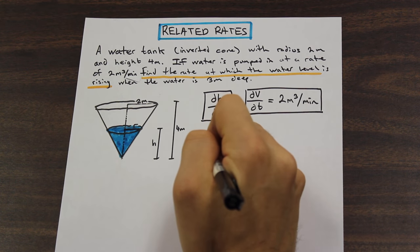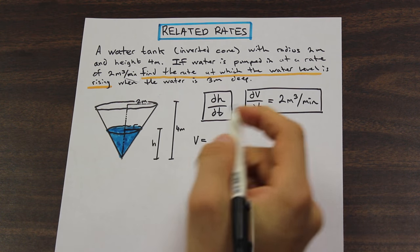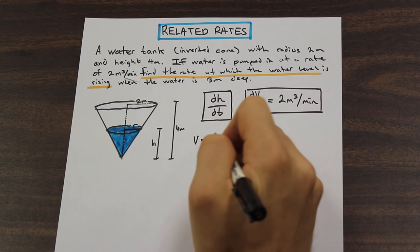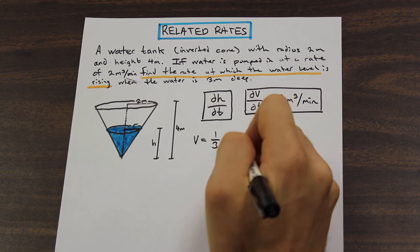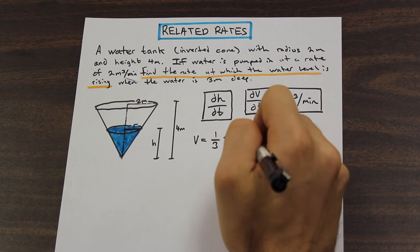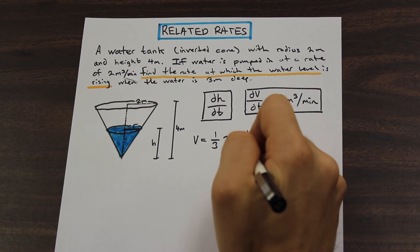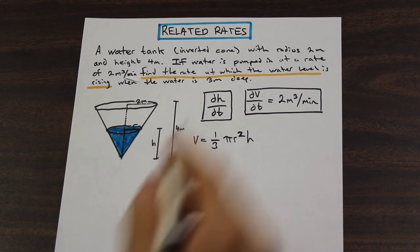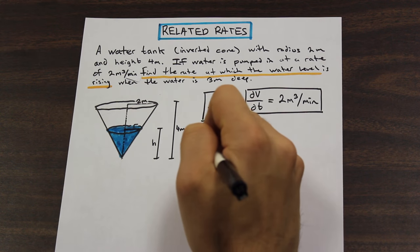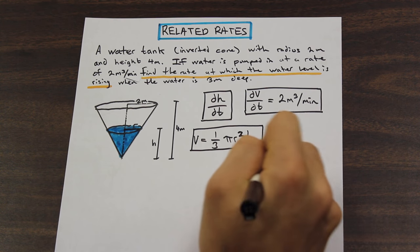The volume of a cone is one-third times pi times r squared times H. So: V = (1/3)πr²H. That's the volume formula for a cone.